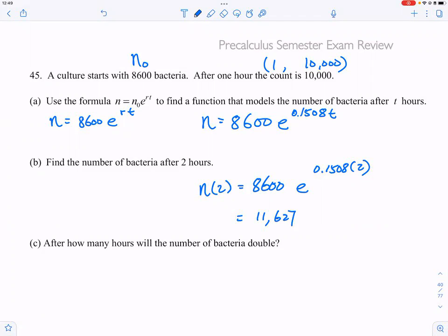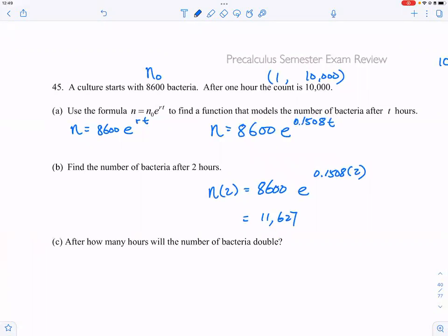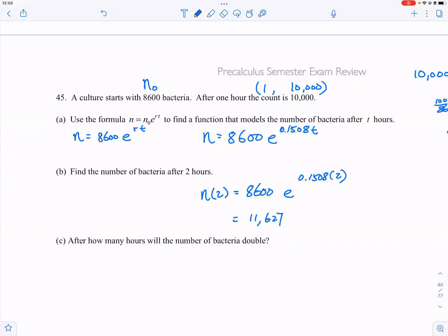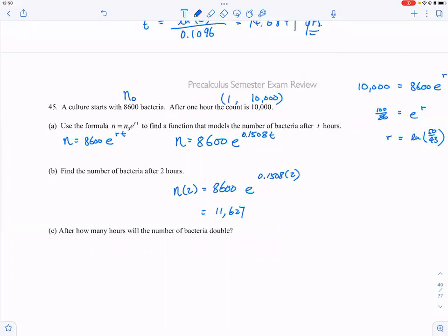0.4, but we will not count it since we will not have 0.4 bacteria. You want to make sure that it makes sense, and this number makes sense because it is greater than 10,000. After one hour it's 10,000, so after two hours I would expect to be somewhat greater than 10,000, not a whole lot more but somewhat more.